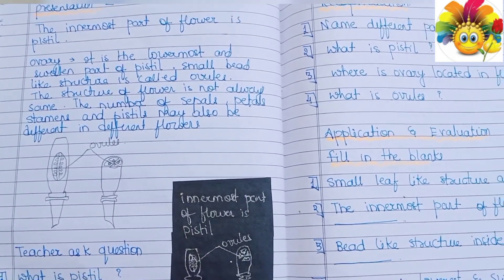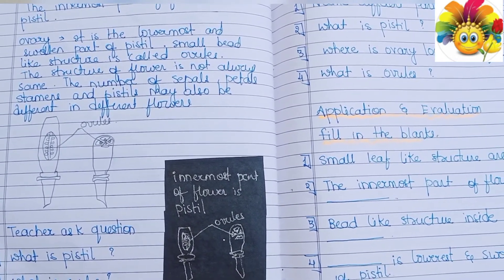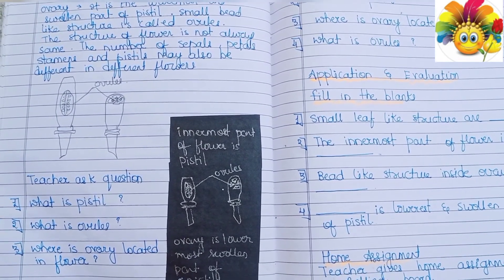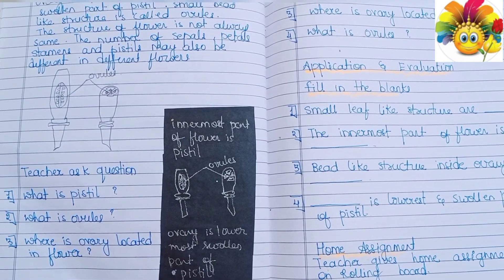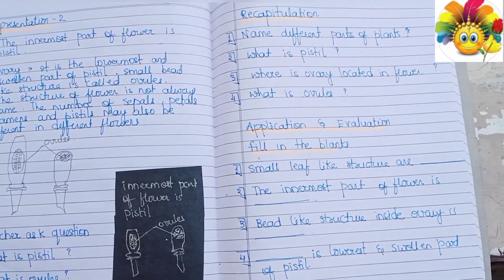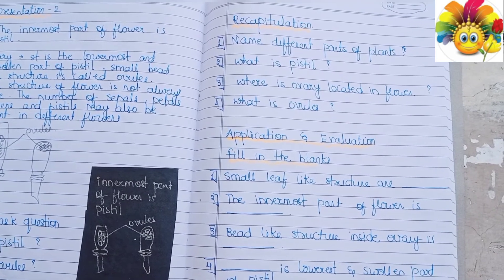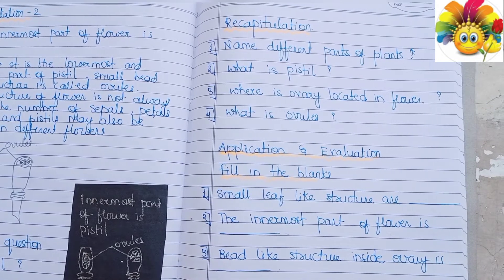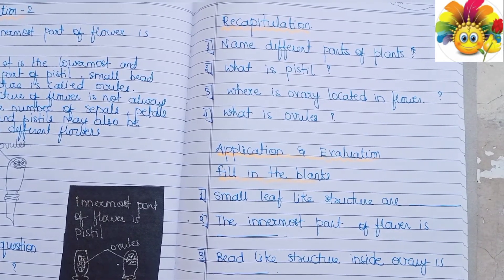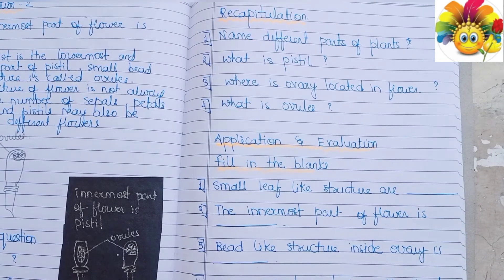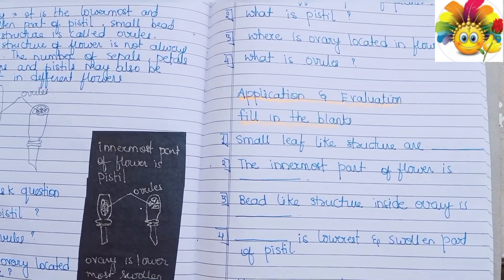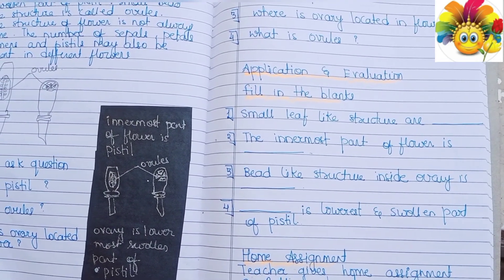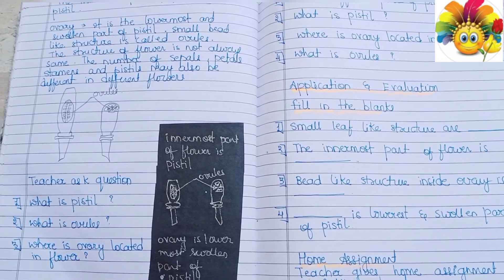After the second presentation, we ask questions related to the topic. You can see blackboard work here also. If you have any doubts, please ask me in the comment section below. For recapitulation, we ask questions regarding whatever we taught the students. Finally, for application and evaluation, we give four to five fill-in-the-blanks, and at last we give a home assignment to students for the perfection of their knowledge.